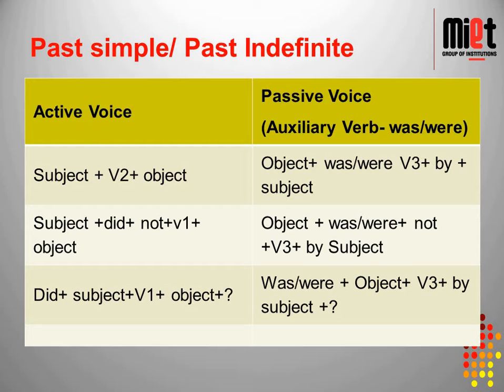Now let us look at past indefinite tense, also called simple past. In passive voice, we change the helping verbs to 'was' and 'were'. The sentence construction is: object plus 'was/were' plus past participle plus 'by' plus subject. For negative sentences: object plus 'was/were' plus 'not' plus third form plus 'by' plus subject. For interrogative: 'was/were' plus object plus third form plus 'by' plus subject.